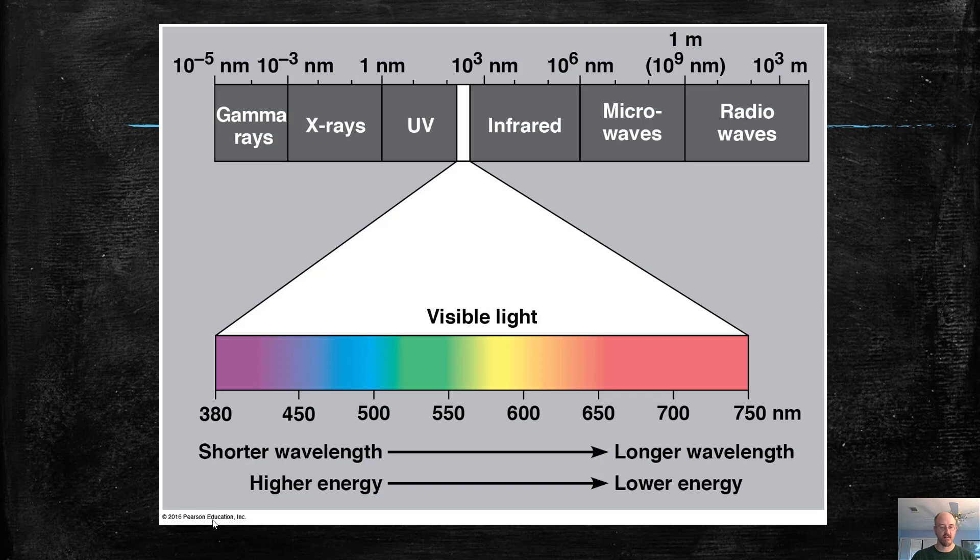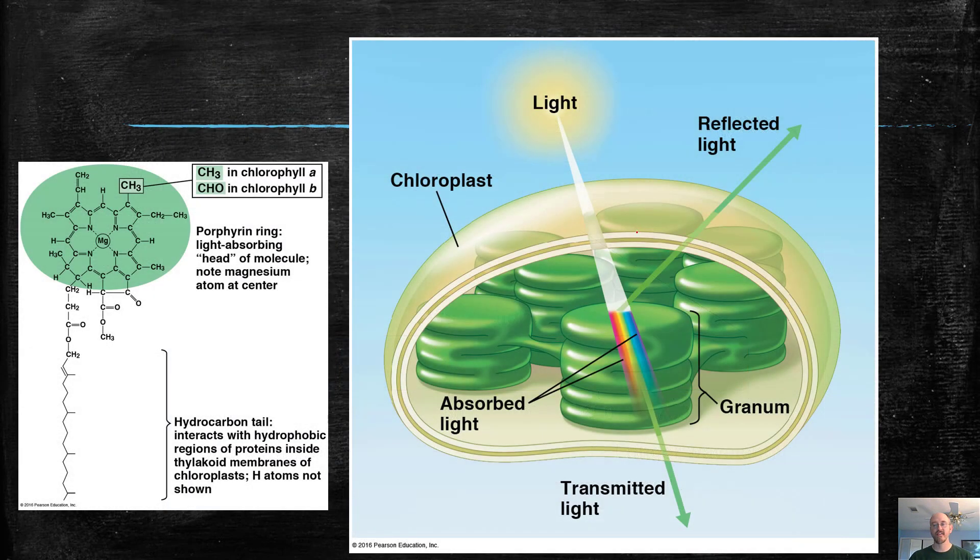Photosynthesis uses various colors of light, especially light in this area here and this area here. Photosynthesis does not use green light. Plants look green. Why do they look green? Because green light is reflected by the plant, not absorbed, so it's bounced off.